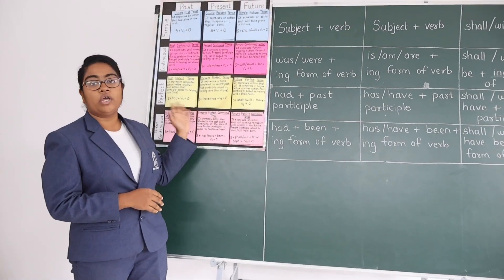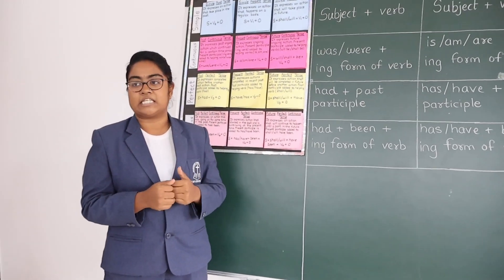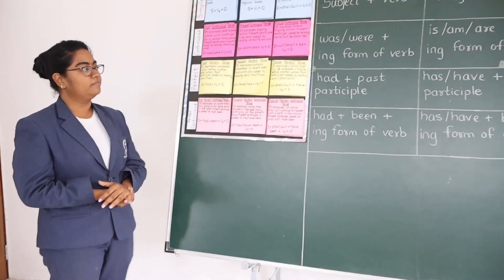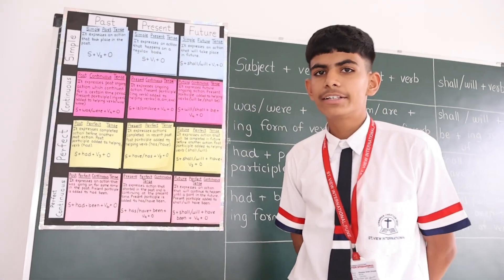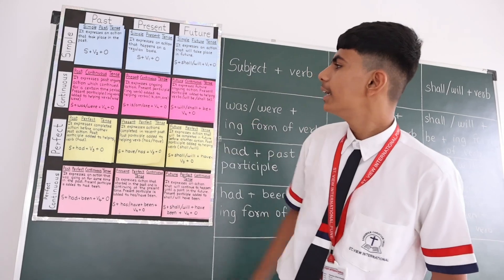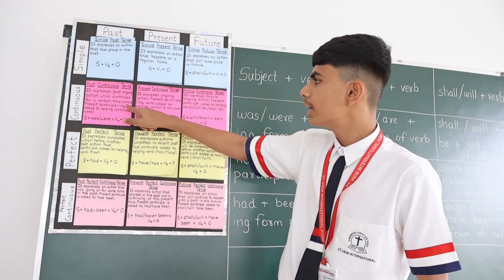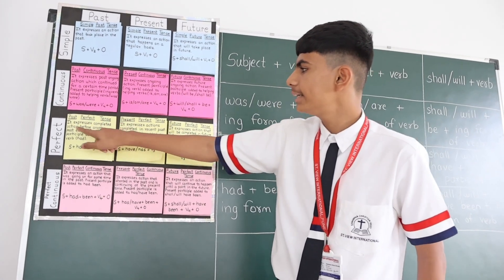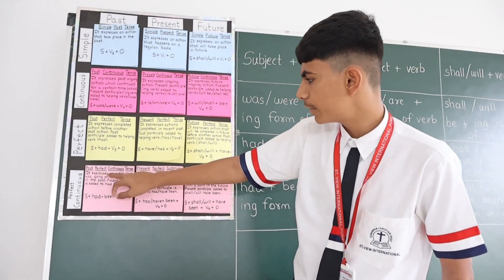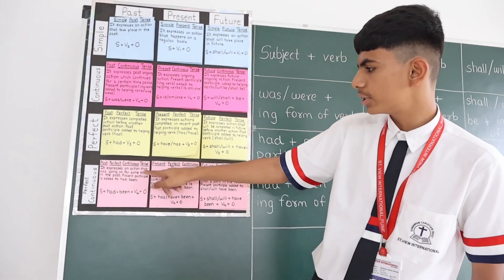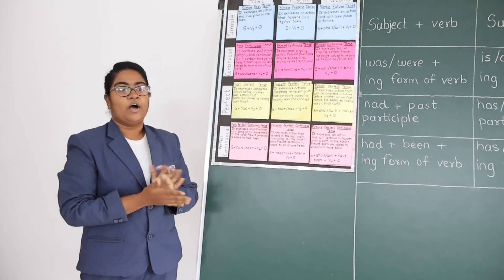As we saw, these are the different types of tenses. Now we will move on towards the detailed definitions of each and every tense. I would like to call Shantanu to come ahead and explain. Simple past tense expresses an action that took place in the past. Past continuous tense expresses a past ongoing action which continues for a certain period of time. Past perfect tense expresses a completed action before another past action. Past perfect continuous tense expresses an action that was going on for some time.